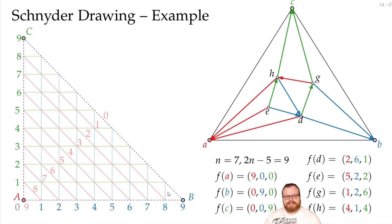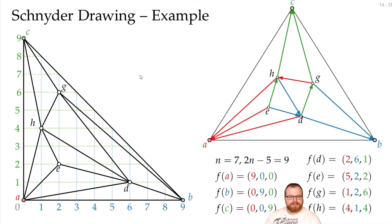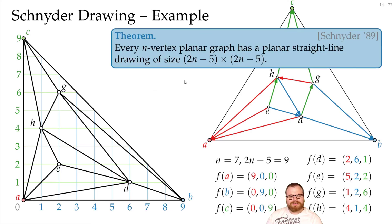So everything lies inside this triangle. We have a, b, c on the outer face. And we put d at 6, 1, so it is here. We put e at 2, 2, so it is here. We put g at 2, 6, so it goes here, and h at 1, 4, so it goes here. And now we have our planar drawing on the 2n-5 times 2n-5 grid.